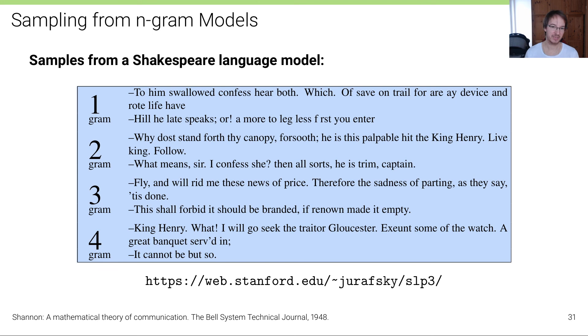Here are some examples from a language model with different n-grams trained on Shakespeare text. You can see that as we increase the context size - this is for a unigram, bigram, trigram, and a 4-gram - the text becomes much more realistic. In the first case the words are just random, we have sometimes single word sentences. Then as we go to higher order statistics, we get sequences of words that start to make sense: 'King Henry what I will go seek the traitor', 'a great bank had served in it cannot be but so'. I encourage you to have a look at this website where you find more examples.